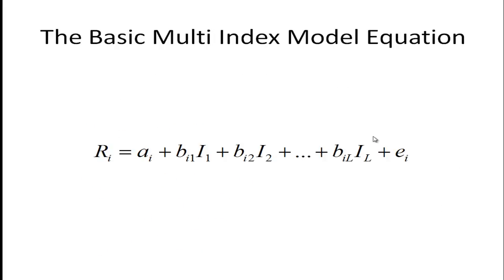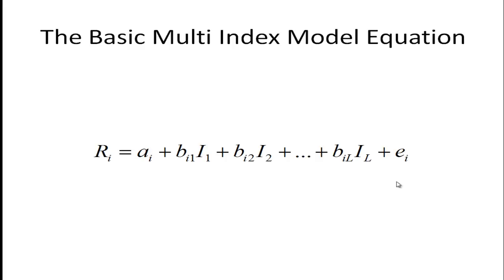Here's what the basic multi-index model looks like. It doesn't look all that different from the single index model, except we have a lot more indexes. If we cut it off at one index, we would have simply a single index model. The only difference is using notation of A and B instead of alpha and beta. But it basically looks the same — just more indexes. We're going to assume we have L indexes.